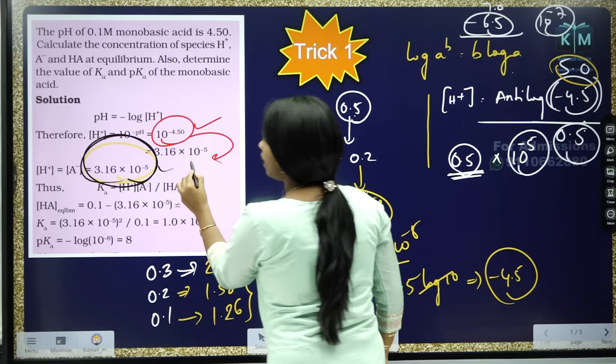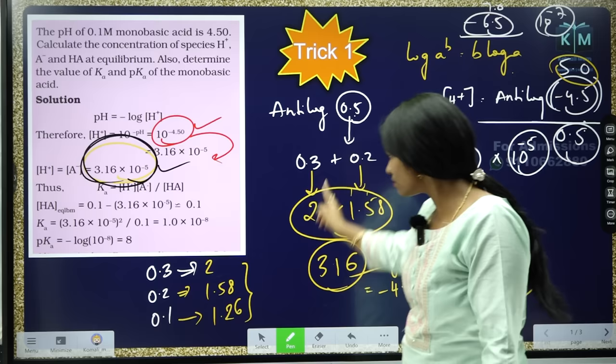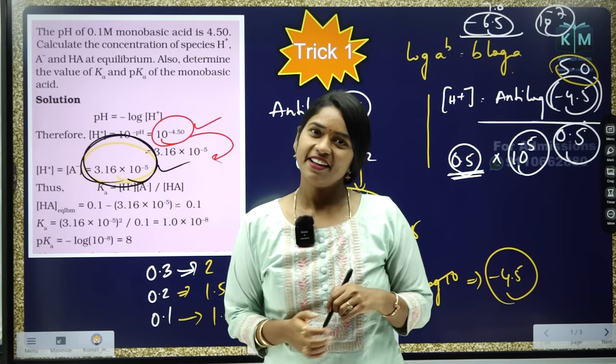In the textbook, they give the direct step, but this is the entire process. Any number you can do by using this methodology. Shall I go to trick number 2? Let's see trick number 2.